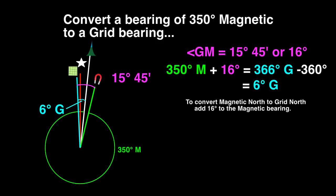To convert magnetic north to grid north, add 16 degrees to the magnetic bearing. To convert grid north to magnetic north, subtract 16 degrees from the grid bearing.